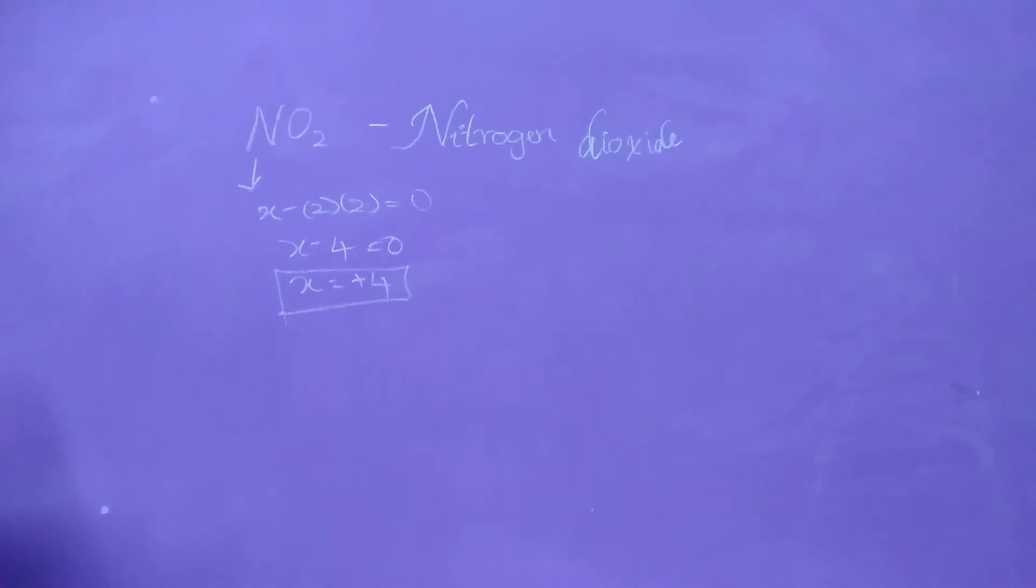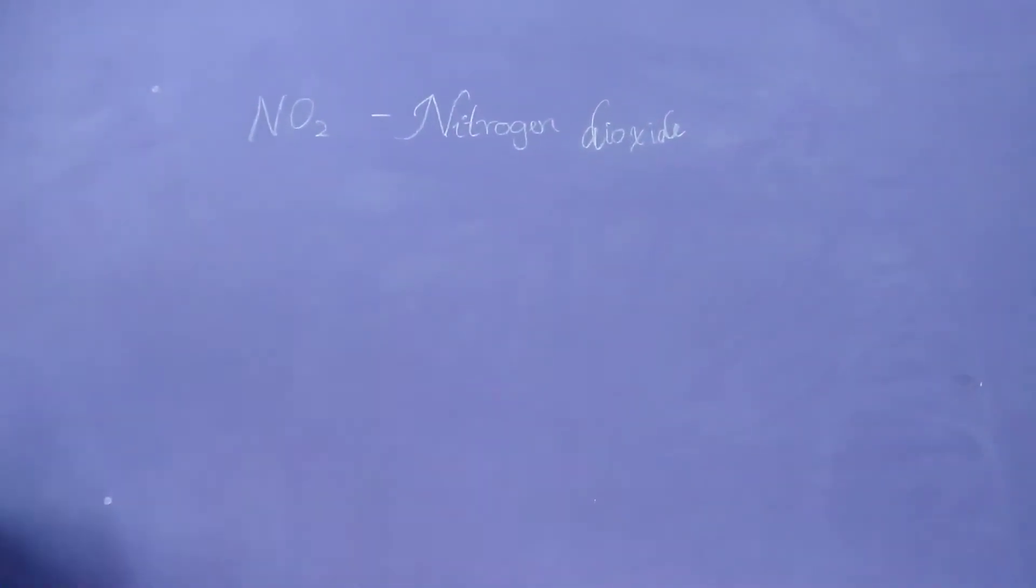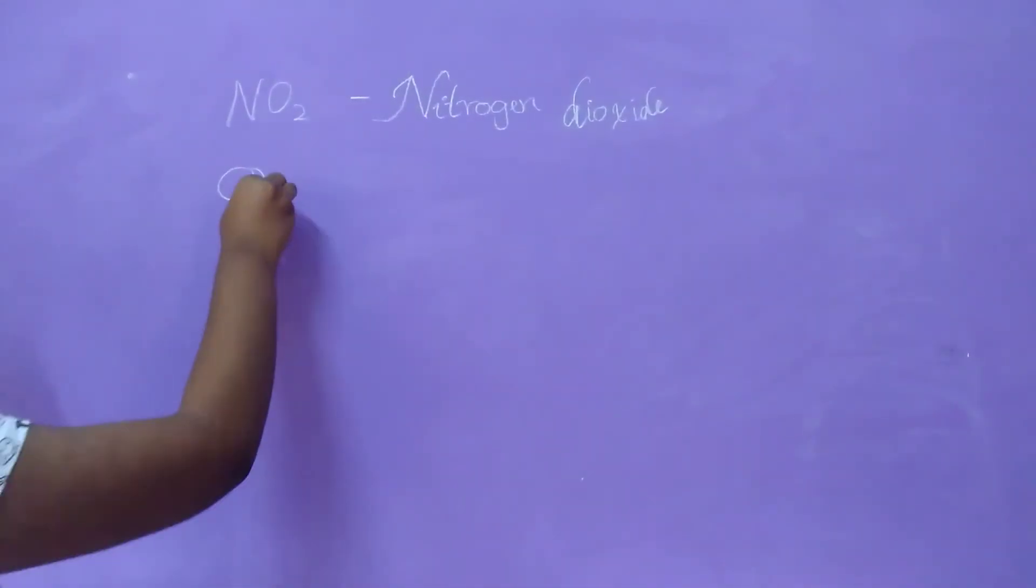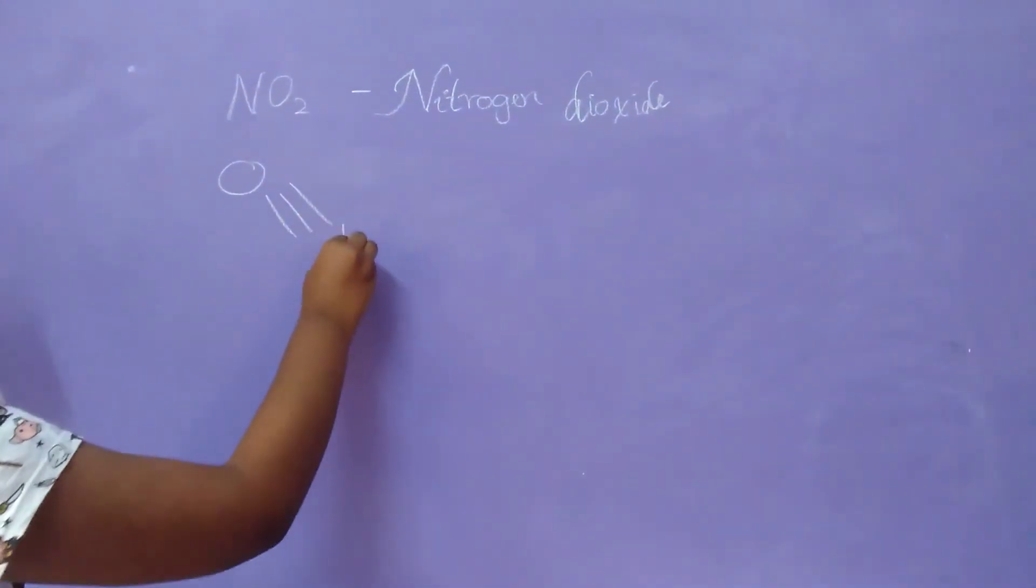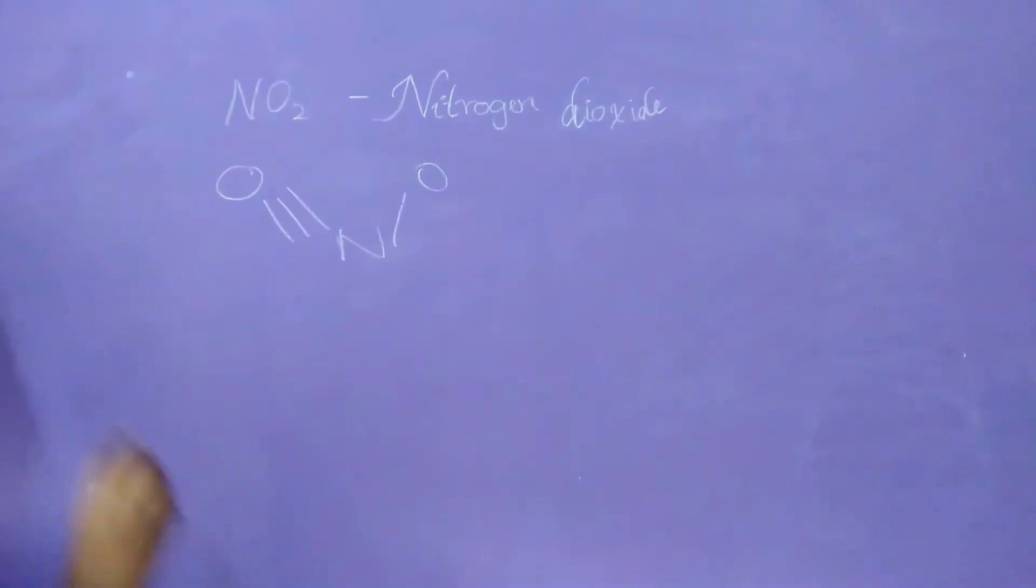The structure of nitrogen dioxide (NO2) will be N triple bonded to O and single bonded to another O. This is the structure of NO2, nitrogen dioxide.